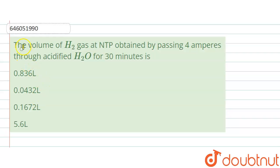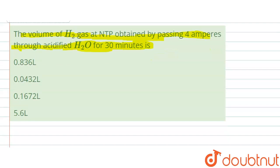The question is: the volume of H2 gas at NTP obtained by passing 4 amperes through acidified H2O for 30 minutes. When we have 4 ampere current, it means we are given the I value of 4 amperes.